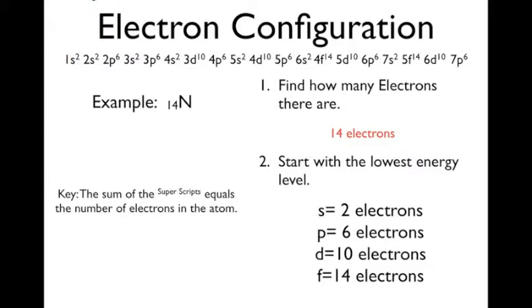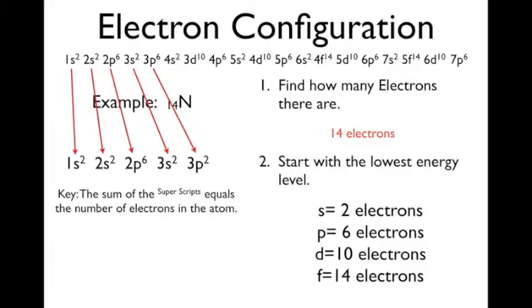So what we're going to start with is 1s2, because you always start with the lowest energy level. Then you go to 2s2, 2p6, and then 3s2, and then 3p2. Now we stopped at 2 and not 6 because we just needed to add up to 14 electrons. And that's what we did. And that's your answer.